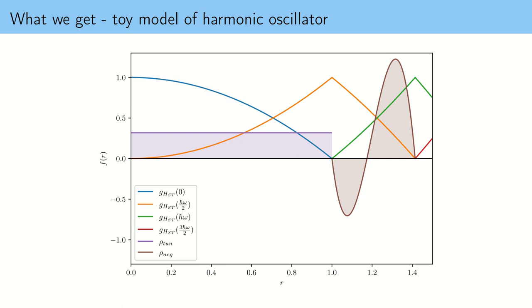This is because time evolution for the harmonic oscillator is in some sense simple, while time evolution for the hydrogen atom is more complicated — there are quantum corrections and one has to discover how to deal with this in an operational manner.